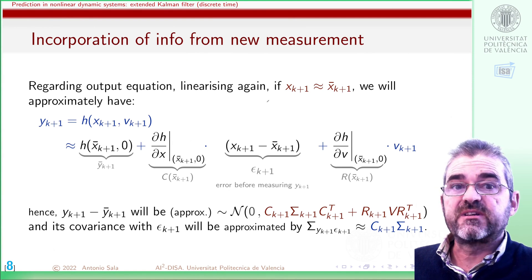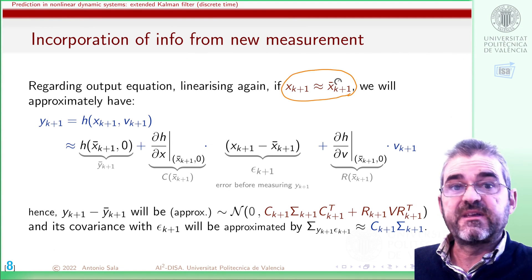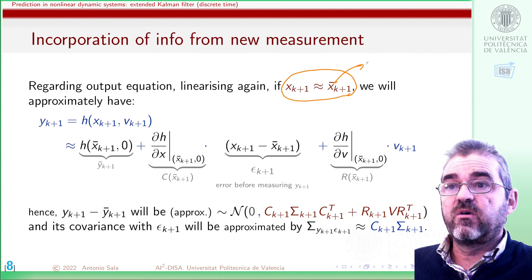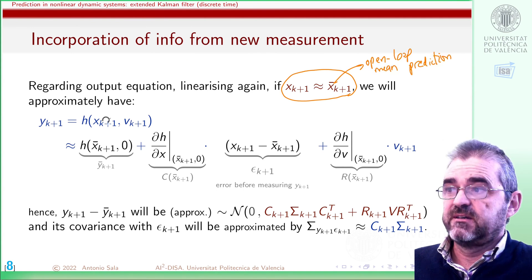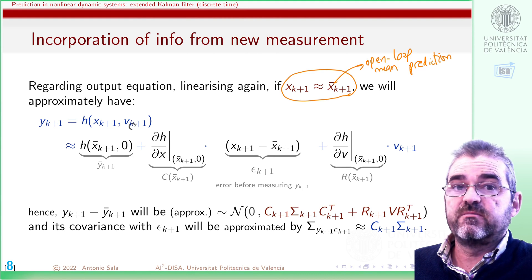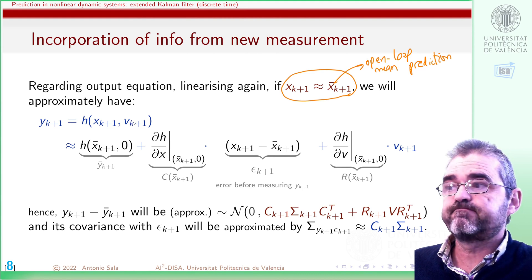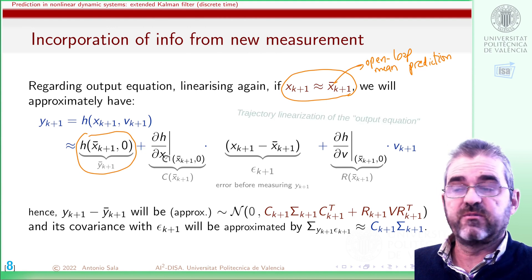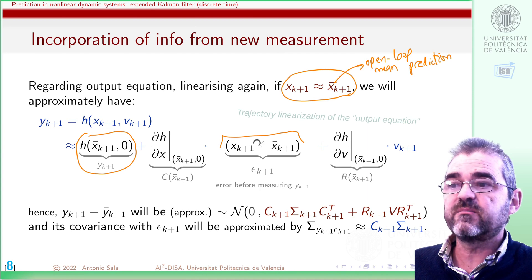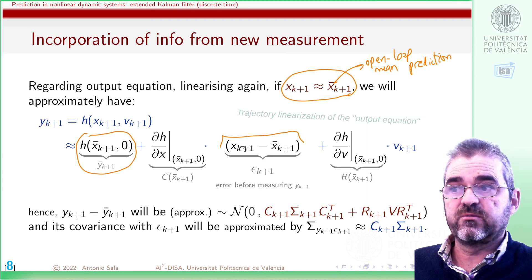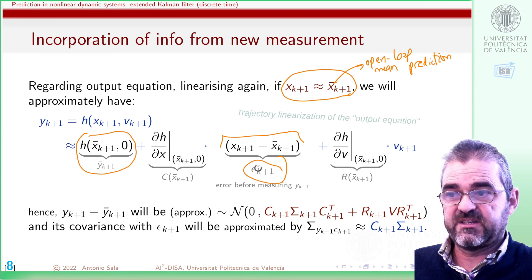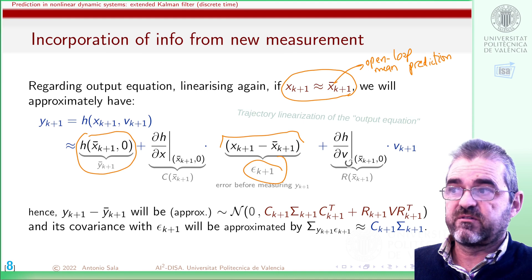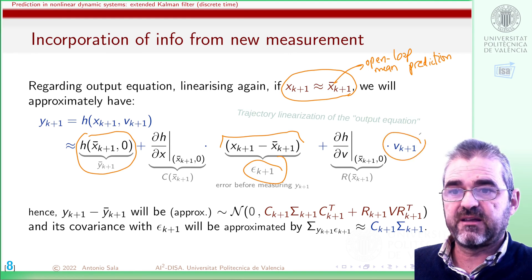Now let us consider the measurement equation. I will also make a linearization, assuming that the true state will be somehow close to the open-loop mean prediction. In that case, assuming that the measurement noise will be close to zero, this will be the expected value of the measurement plus some Jacobian with respect to state multiplied by the increments — the difference between the true state minus my prediction, which is epsilon — plus another Jacobian of this thing with respect to the measurement noise, multiplied by the measurement noise.